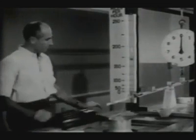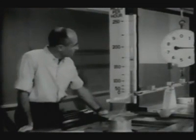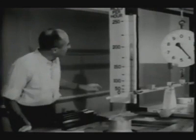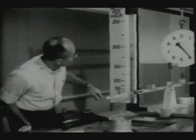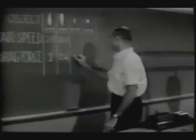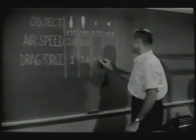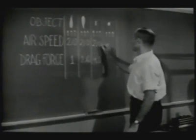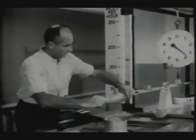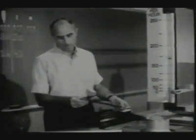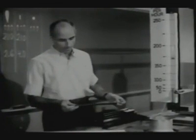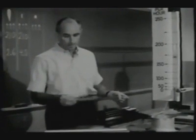Now let's take the airfoil off altogether so that we measure the drag of the rectangular support alone. Even though the cross-sectional area of this rectangular support is very much less than that of the airfoil, its drag is about four times as large.